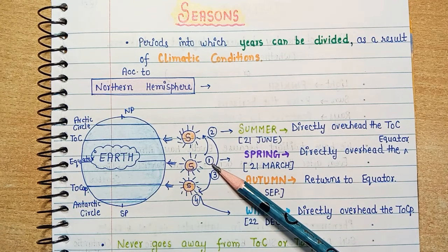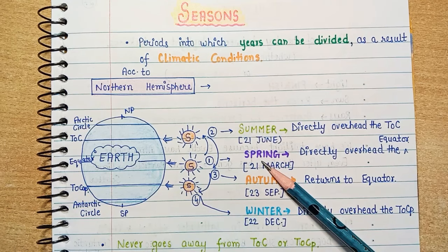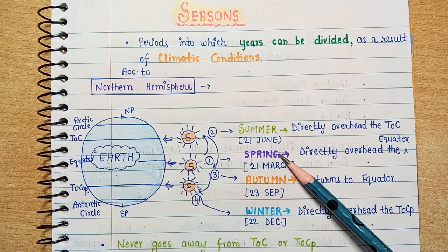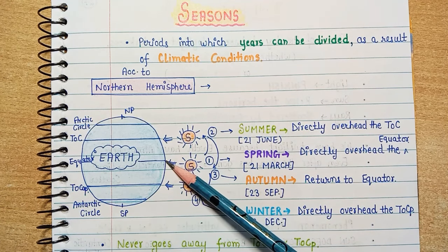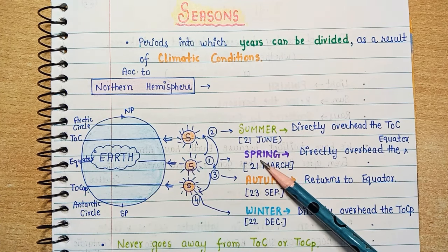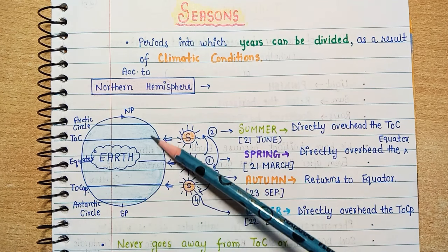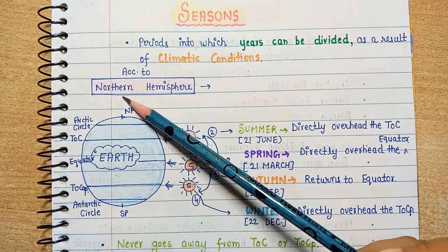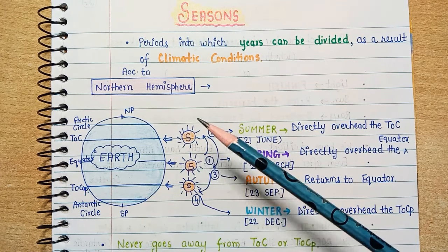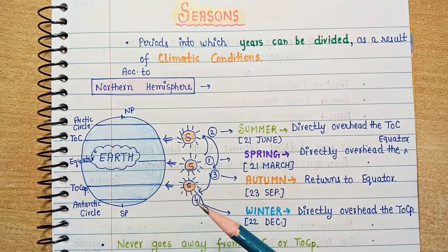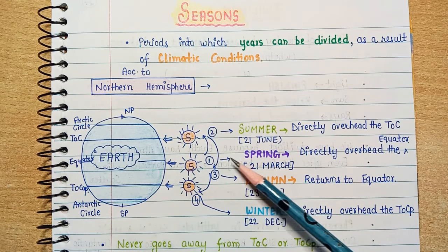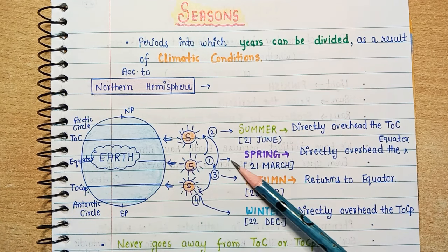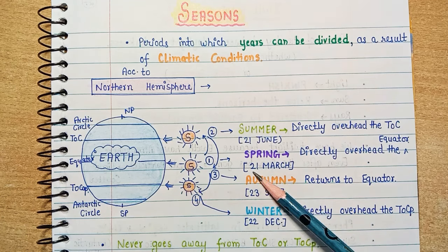So let's start with the first one. First is spring. What happens at this time? The sun is directly overhead the equator. This is the northern hemisphere and the equator divides it from the southern hemisphere. When the sun is directly on the equator, we call this spring. This spring occurs around 21st March.